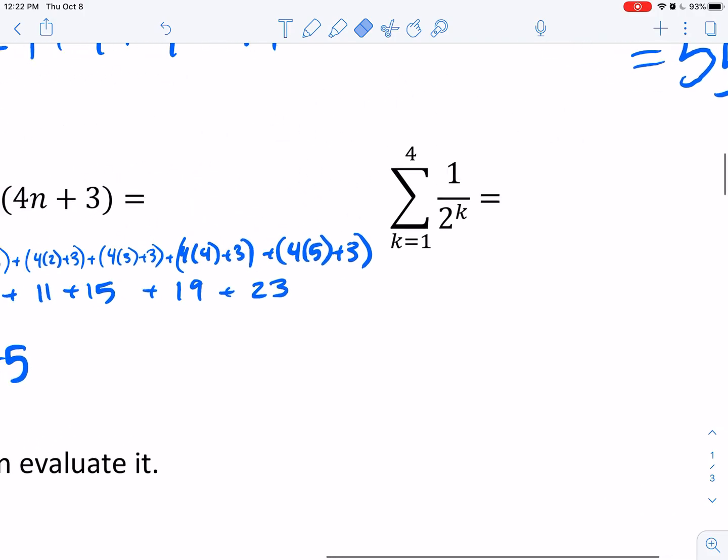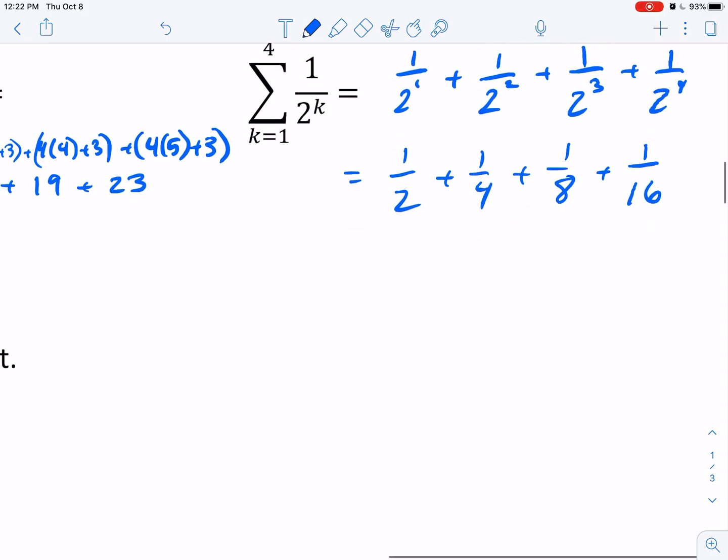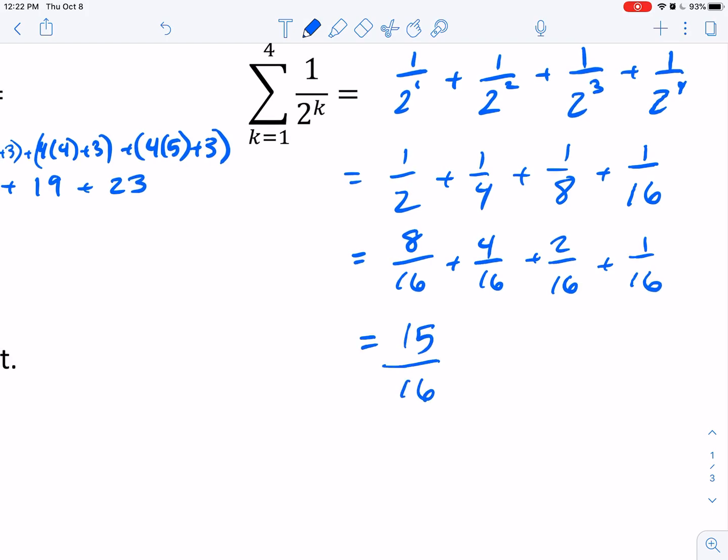The next one is the first four terms. I have 1 over 2 to the 1, plus 1 over 2 squared, plus 1 over 2 cubed, plus 1 over 2 to the fourth, which equals 1 half plus 1 fourth plus 1 eighth plus 1 sixteenth. With a common denominator of 16, this equals 15 over 16.